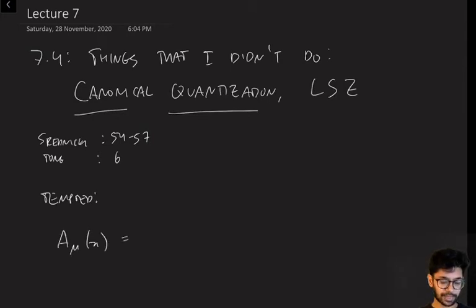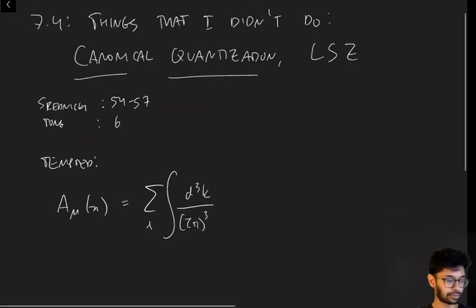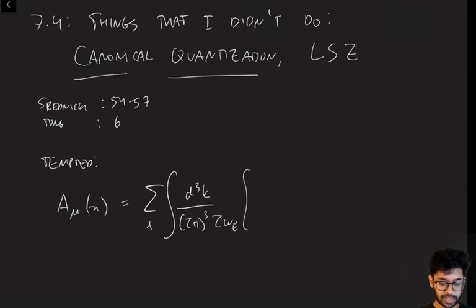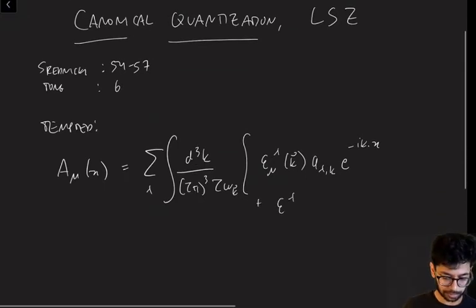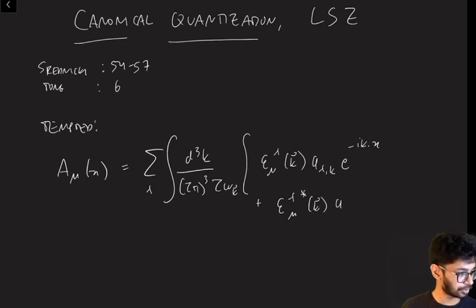and write it as a sum over creation and annihilation operators. What does that sum look like? Well, we'll take the same form as everything else that we've canonically quantized. There will be an integral over momenta, there'll be some kinematic factors involving the energy, and then there'll be a sum involving the annihilation operator and also a term involving the creation operator.